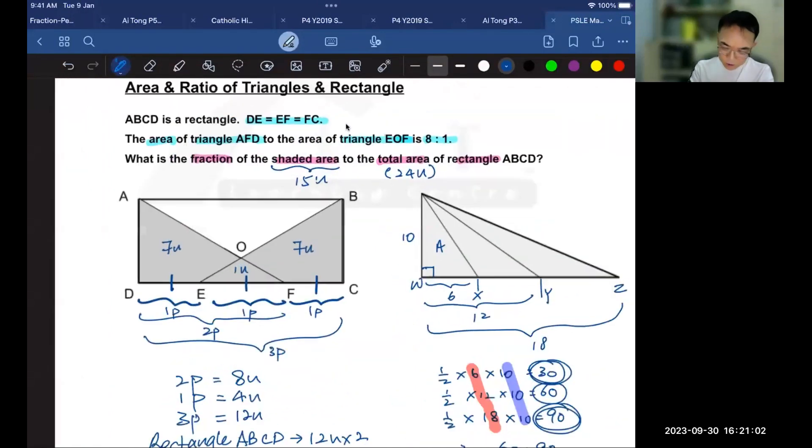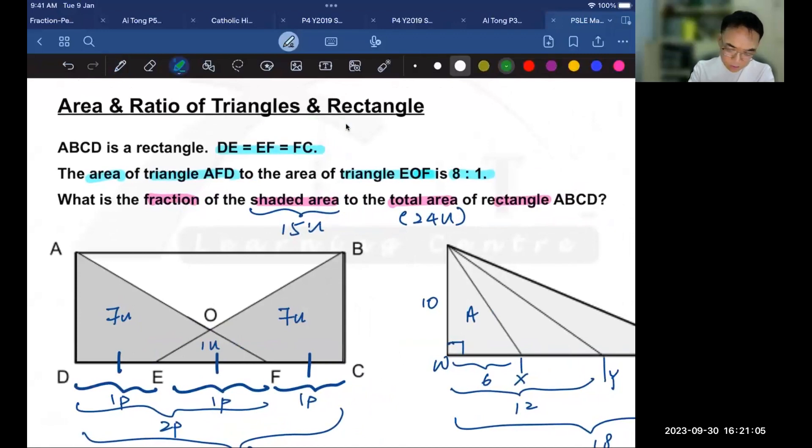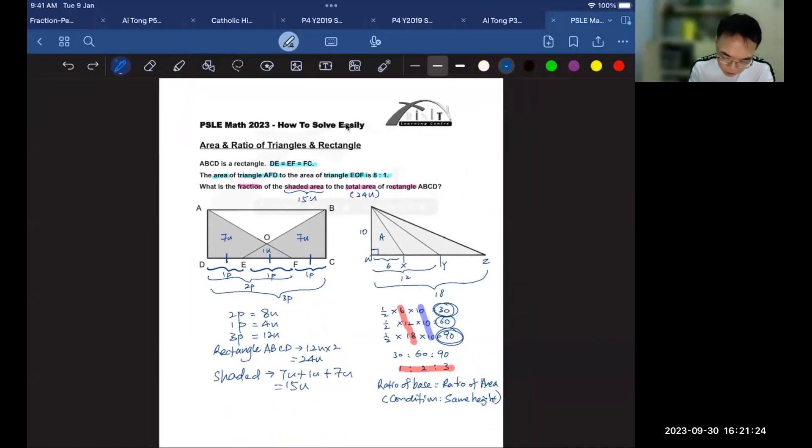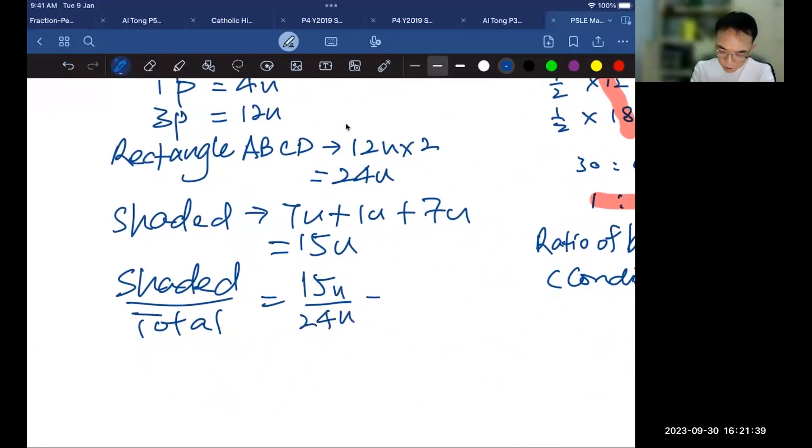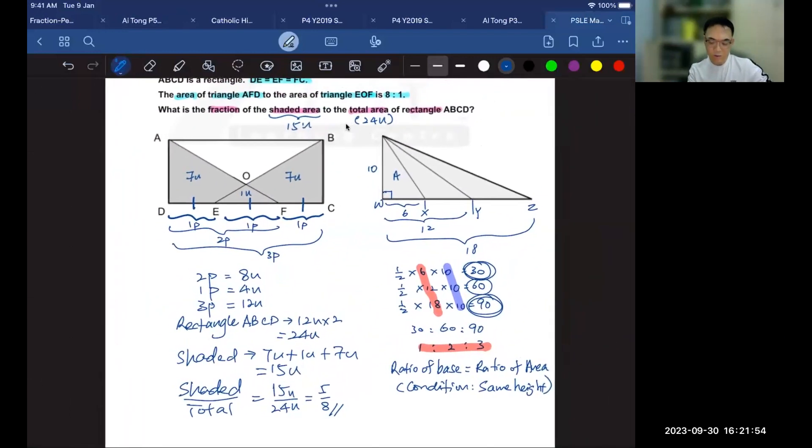And to find the answer to this question, what fraction of the shaded area to the total area of the rectangle, it means that this is your numerator and this is your denominator. So that's 15 out of 24. So we can answer the question now. So the shaded area over the rectangle, which is the total area, is 15 out of 24, which simplifies into 5/8. And I believe this is actually option 2 or option B of the question paper. So if you got 5/8, you have the correct answer.